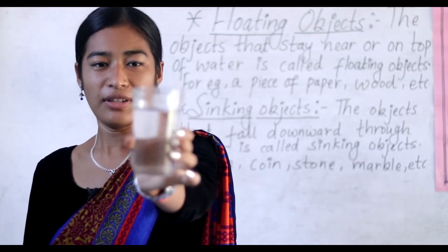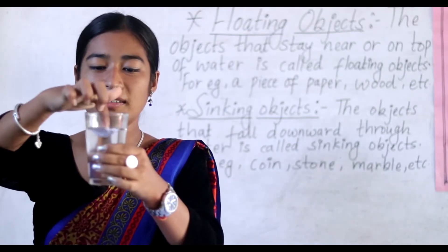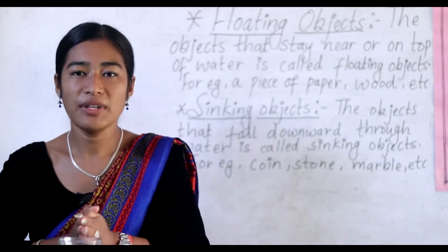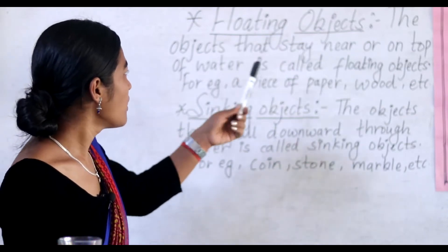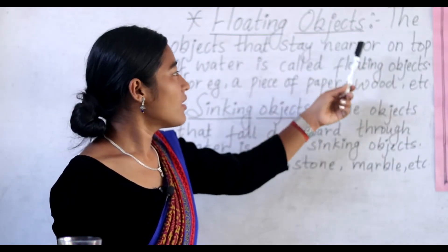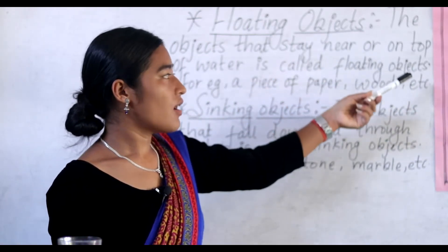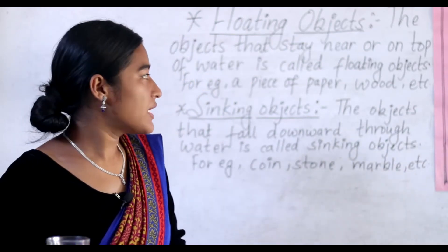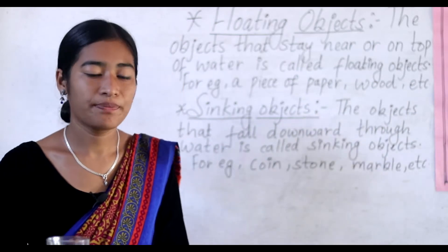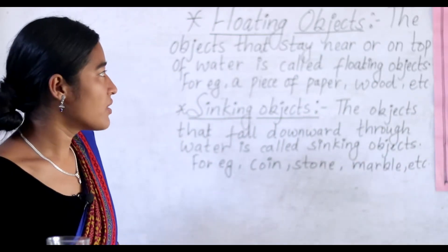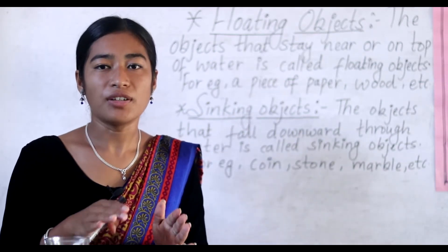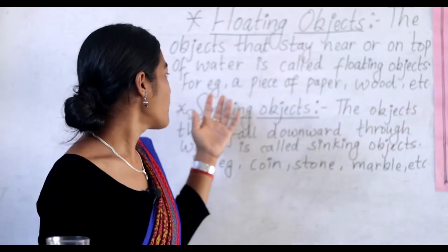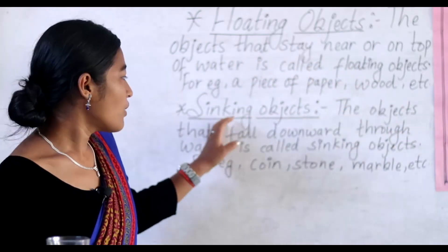Have a look — look at it carefully. This paper does not sink into the water, so the piece of paper is a floating object. You can also look at a boat as an example. The object that stays near or on top of water is called a floating object. So a piece of paper and wood are both floating objects. The definition: the object that stays near or on top of the water is called a floating object. For example, a piece of paper, wood, etc.